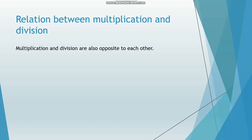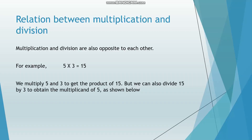Multiplication and division are also opposite to each other. For example, 5 multiplied by 3 is equal to 15. We multiply 5 and 3 to get the product of 15. But we can also divide 15 by 3 to obtain the multiplicand of 5, as shown below: 15 divided by 3 is 5.